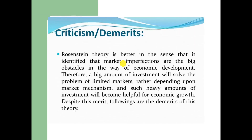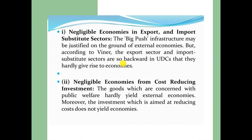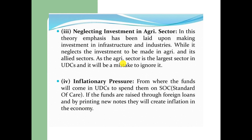This theory also has some criticisms and demerits. Critics say that there are negligible economies in the export and import-substitute sectors. The big push infrastructure may be justified on the ground of external economies, but according to Winder, the export and import-substitute sectors are so backward in underdeveloped countries that they hardly give rise to economies — negligible economies from cost-reducing investment. Similarly, the theory neglects investment in the agriculture sector. Emphasis is laid upon infrastructure and industries while ignoring investment in agriculture and its allied sectors, which is the largest sector in less developed countries.